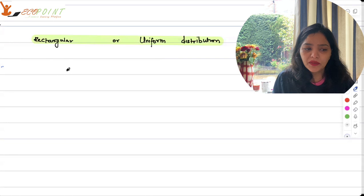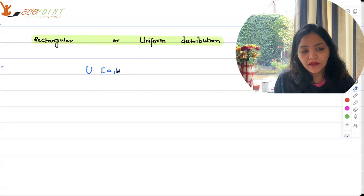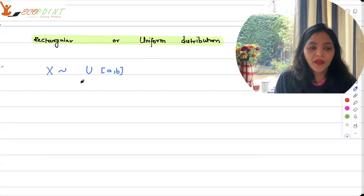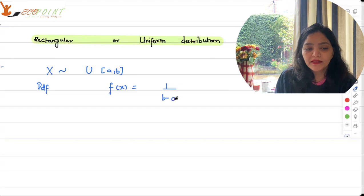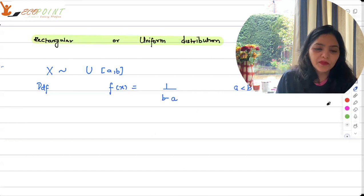So when the random variable is uniformly distributed over some interval say AB, we say that x is uniformly distributed in AB where the PDF of x is equal to 1 upon b minus a where a is less than b. So what does this actually mean? Let's picture this.